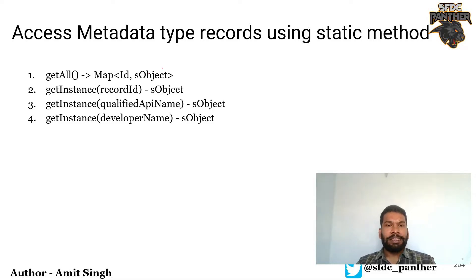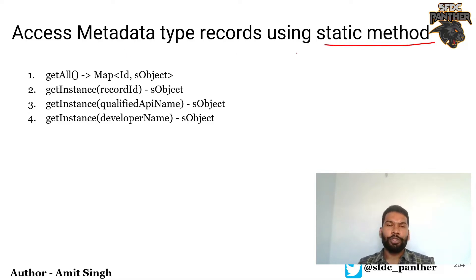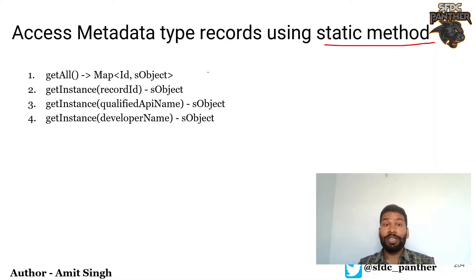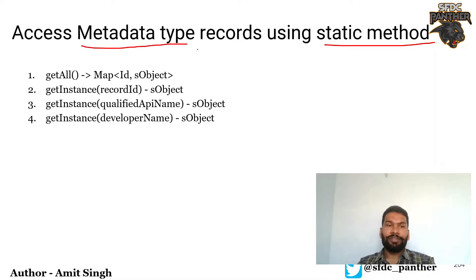In this lecture we are going to talk about how we can access custom metadata types using static methods. Before Spring 21, we were making SOQL queries over custom metadata types to get all records, and whenever we made those SOQL queries we had to specify the field names. In the future, if we wanted to add or remove fields, we would need to go and modify that class wherever the SOQL query was being made for the custom metadata type.